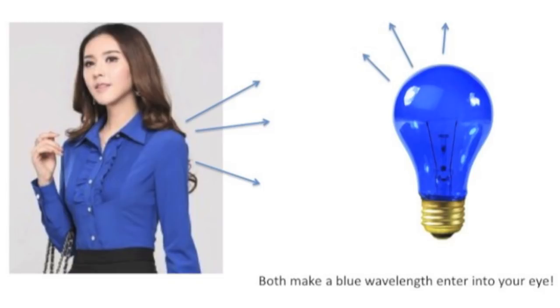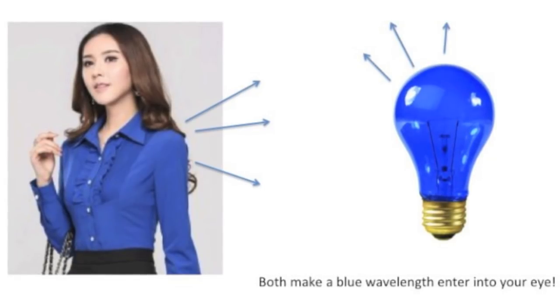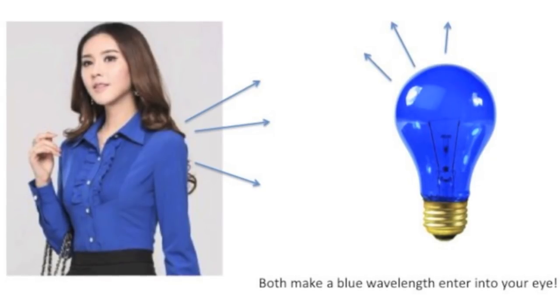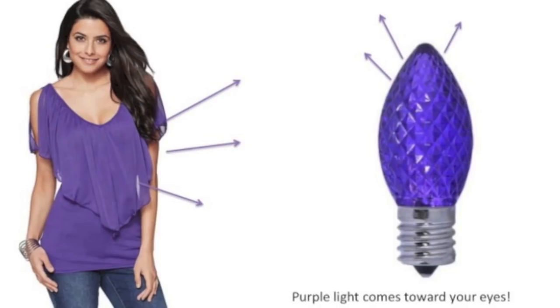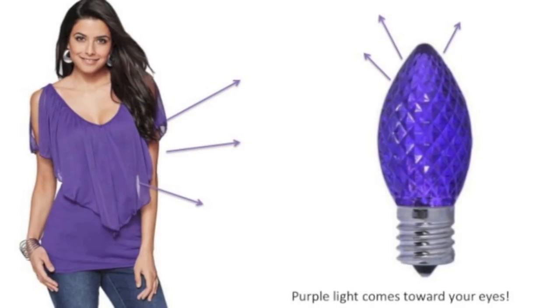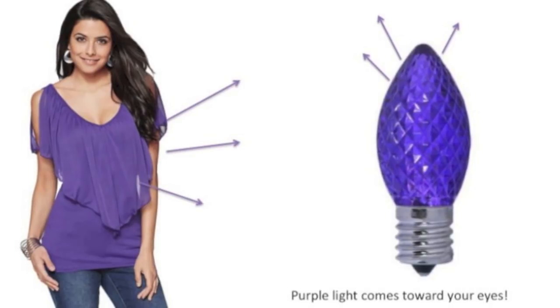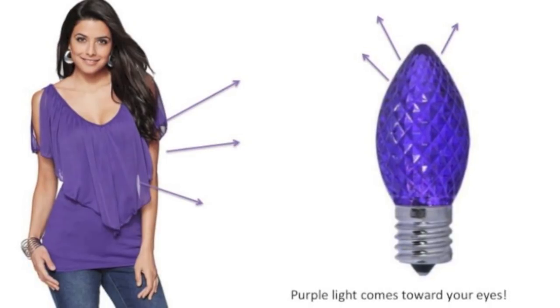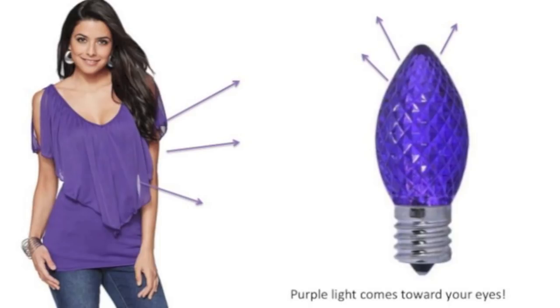In the same way - I'm going to use this for this explanation because I think it's easy to think about - a blue light bulb is going to do the same thing. It's going to make blue wavelengths travel toward your eye. The same thing for purple. The purple shirt is going to reflect the purple wavelength, so the purple light will travel toward your eye, making you perceive the color purple.